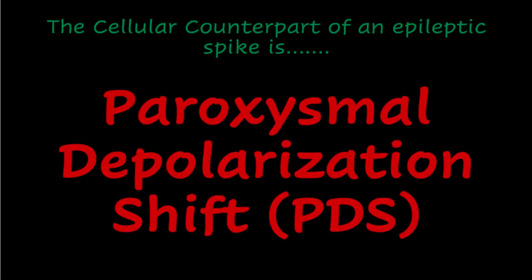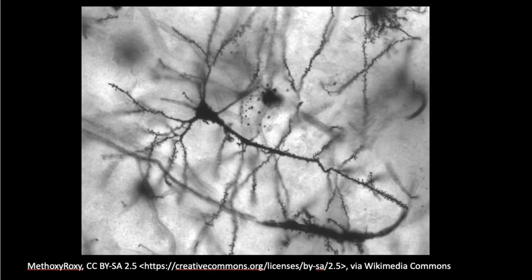The answer is that the cellular counterpart of an epileptic spike is something called a paroxysmal depolarization shift, also called PDS for short. In the coming slides I will give you a brief introduction about the PDS. This is a frequently asked question in many EEG, neurophysiology, and neurology exams.